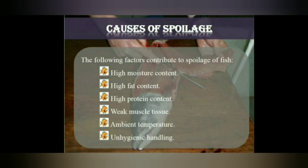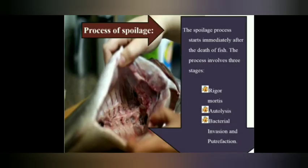Causes of spoilage include high moisture content, high fat content, high protein content, weak muscular tissue, favorable temperature conditions, and unhygienic handling. The process of spoilage starts immediately after the death of the fish and involves three stages: rigor mortis, autolysis, and bacterial invasion and putrefaction.